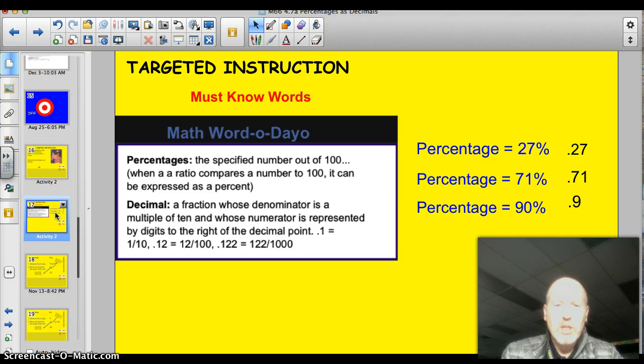Let's take a look at some must-know words. First of all, just a quick review. Percentages. That's the specified number out of 100. So, 94%, that's 94 out of 100, or 94 out of every 100 people.